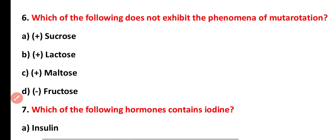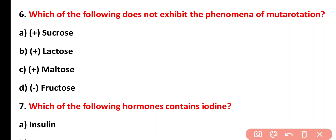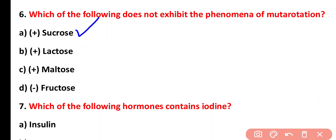Question six: which of the following does not exhibit the phenomenon of mutarotation? Options: sucrose, lactose, maltose, fructose. The correct answer is option A. Sucrose does not exhibit mutarotation because it does not have any hemiacetal or hemiketal group.